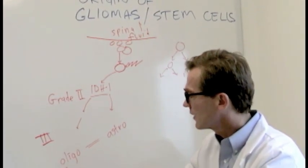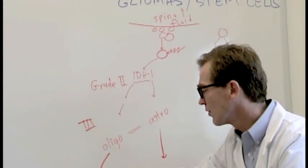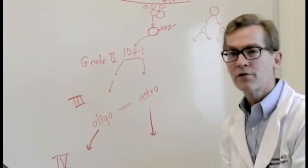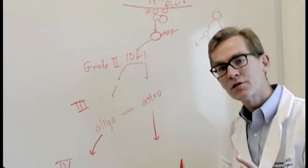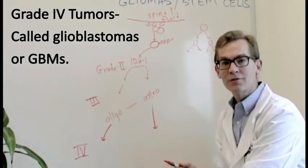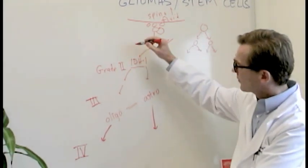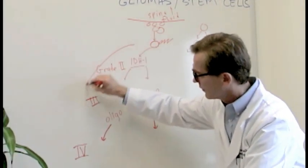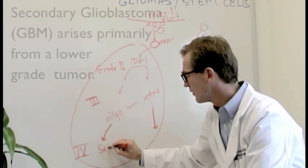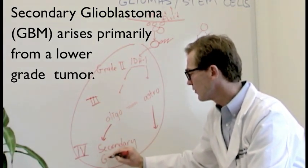And then, unfortunately, most of these tumors at some point in the future can go on to become a grade 4 glioma. When a tumor becomes a grade 4, it's universally called a glioblastoma, even if it came from an oligo type of tumor or an astrocytoma. So this pathway is called secondary glioblastoma or GBM.